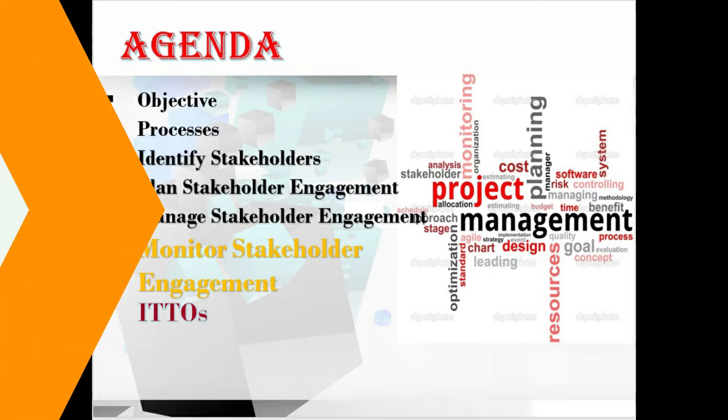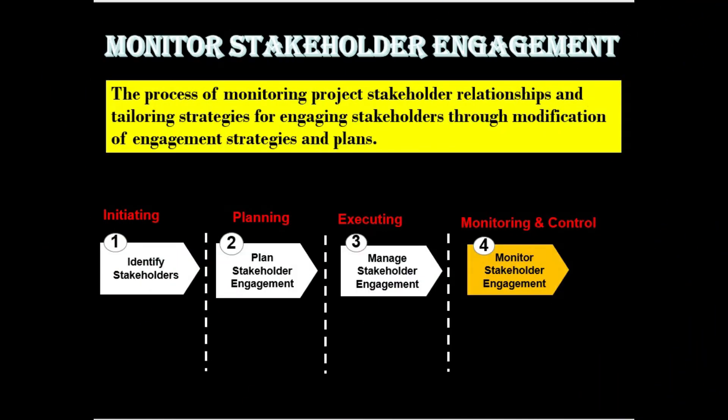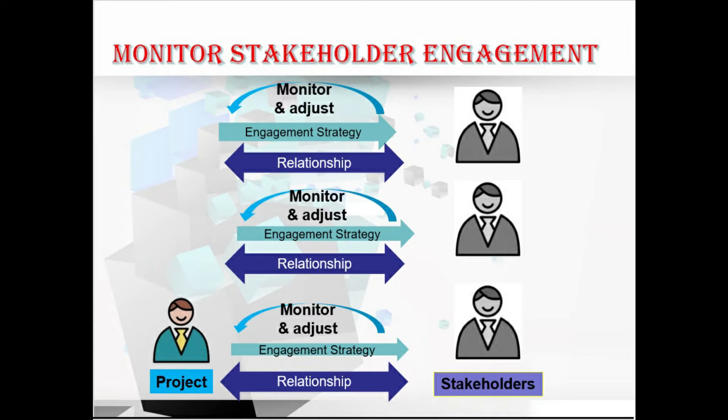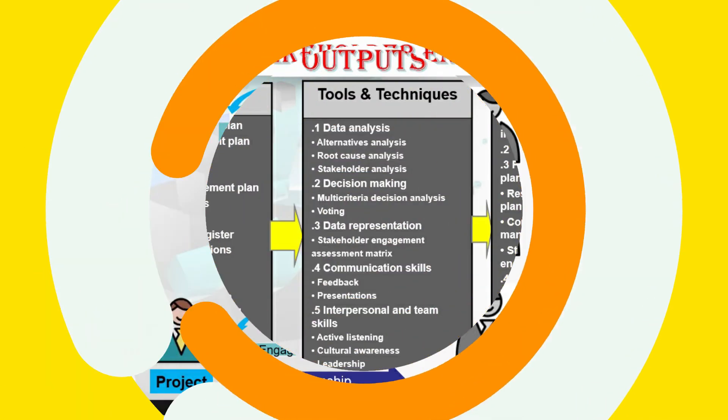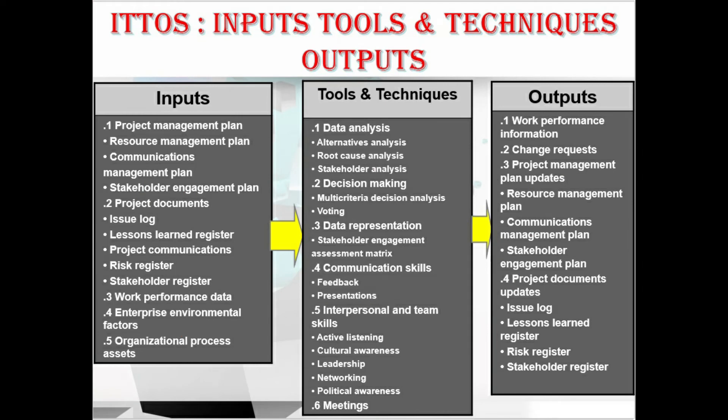It is the fourth process in the project stakeholder management area. Monitor Stakeholder Engagement is defined as the process of monitoring project stakeholder relationships and tailoring strategies for engaging all stakeholders through the modification of engagement strategies and plans. The main key benefit of this process is that it maintains or increases the efficiency and effectiveness of stakeholder engagement activities as the project evolves and its environment changes.